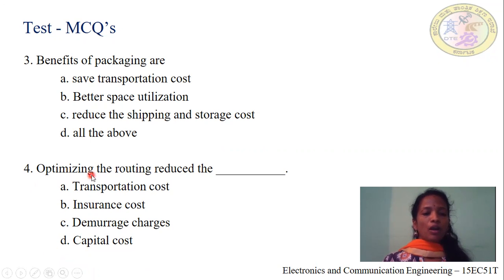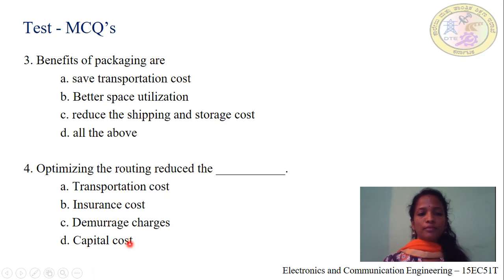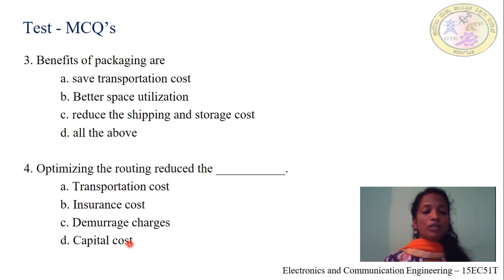Question number 4: Optimizing routes reduces dash. Option A: transportation cost. Option B: insurance cost. Option C: demurrage charges. Option D: capital cost. We have already seen that routing is the selection of paths for transportation from the receiving station to the delivery station. Optimizing routing always saves and decreases the transportation cost. Hence, option A, transportation cost, is correct.